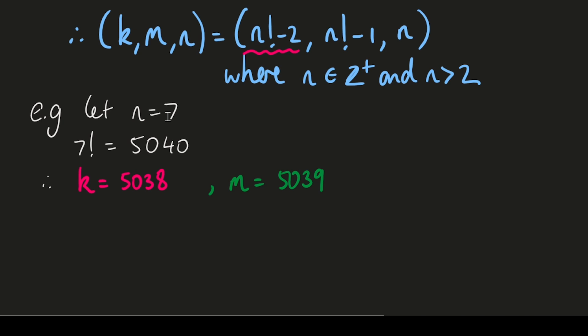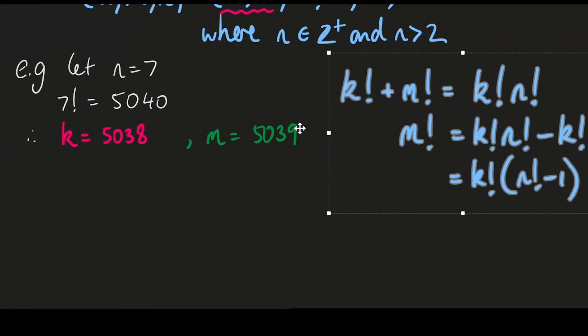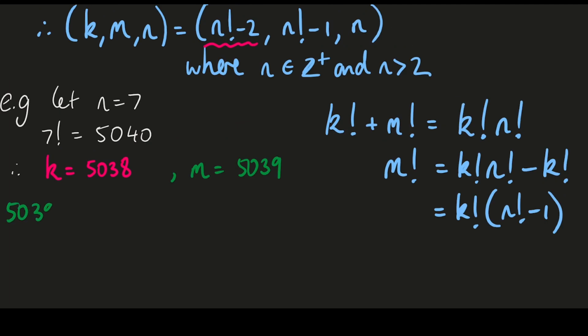So using our equation which we had from above, we have 5,039 factorial is equal to 5,038 factorial times (n factorial minus 1). n factorial minus 1 here is 5,039. And that works out right because 5,039 times 5,038 factorial is actually 5,039 factorial.